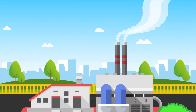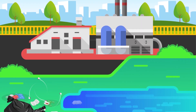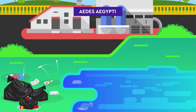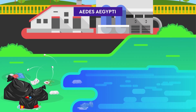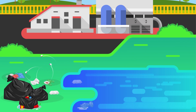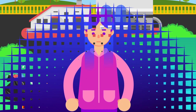Dengue is transmitted mainly by the mosquito Aedes aegypti, which breeds in standing water containers such as tires, barrels, and discarded bottles. The mosquito becomes infected about two weeks after feeding on an infected person and remains infected for life.